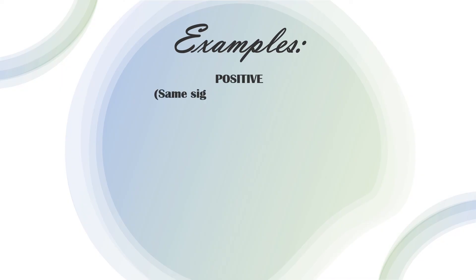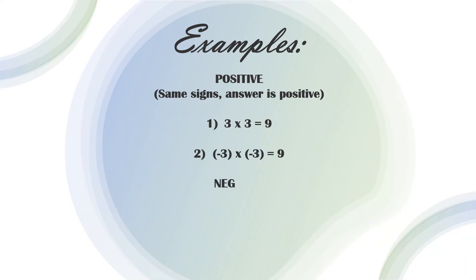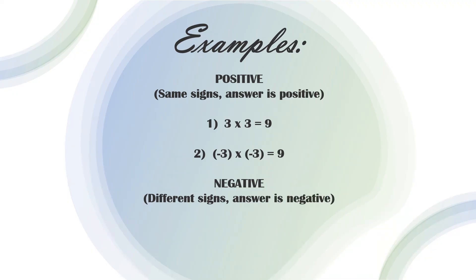Examples — positive, same signs, answer is positive: 3 times 3 equals 9; negative 3 times negative 3 equals 9. Different signs, answer is negative: 3 times negative 3 equals negative 9; negative 3 times positive 3 equals negative 9.